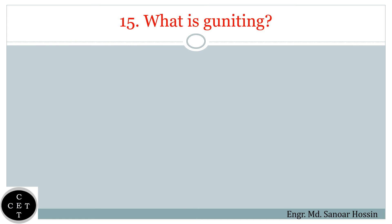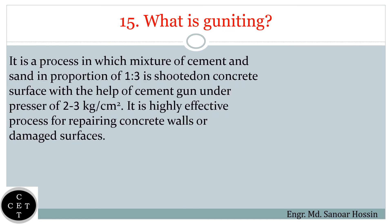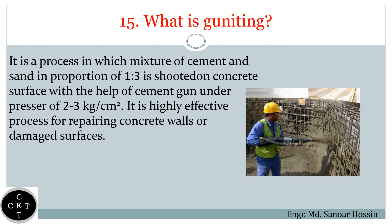Question number fifteen: What is guniting? It is a process in which a mixture of cement and sand in proportion of 1:3 is shot onto a concrete surface with the help of a cement gun under pressure of 2 to 3 kilograms per centimeter square. It is a highly effective process for repairing concrete walls or damaged surfaces.